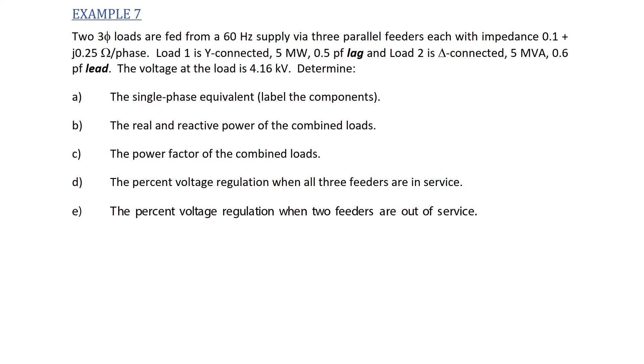Example 7: two three-phase loads are fed from a 60 Hz supply via three parallel feeders, each with an impedance of 0.1 plus J0.25 ohms per phase. Load 1 is Y-connected, 5 megawatts, 0.5 power factor lag. Load 2 is delta-connected, 5 megavolt ampere, 0.6 power factor lead. The voltage at the load is 4.16 kilovolts.